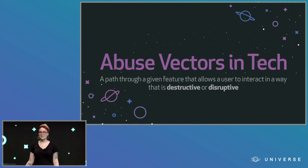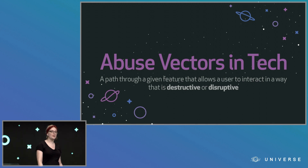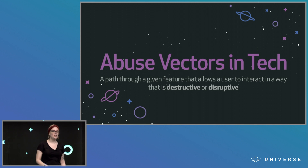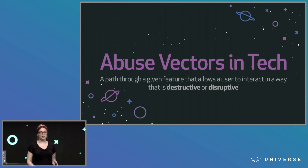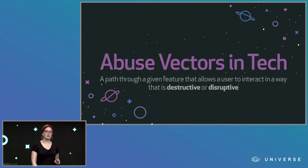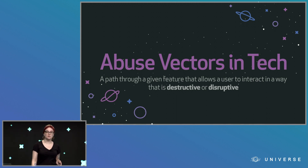A little definition: abuse vectors in tech are a path through a given feature that allows a user to interact in a way that is destructive or disruptive. Not all users are actively trying to be destructive when they find a weird path through it. Maybe someone's opening a bunch of issues because they want help, but they don't understand that's not exactly the right route — a potentially disruptive user who isn't trying to be destructive, but has that same end effect.